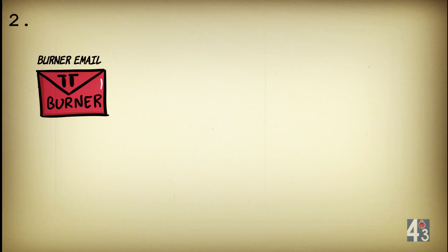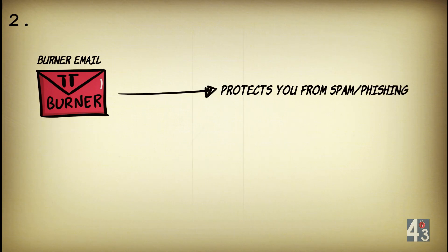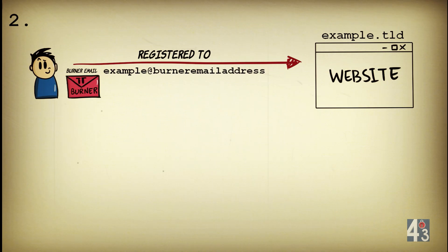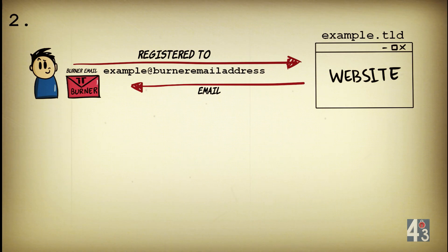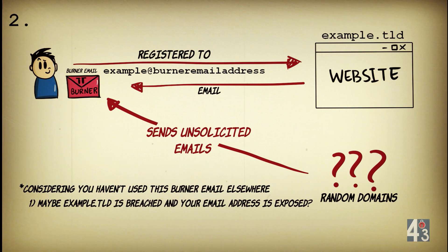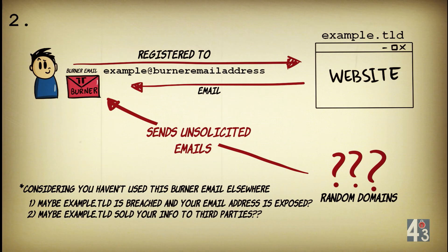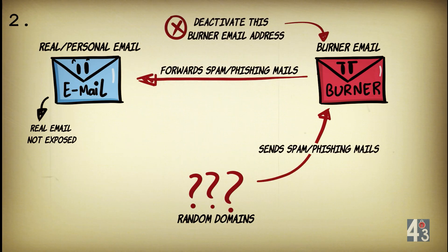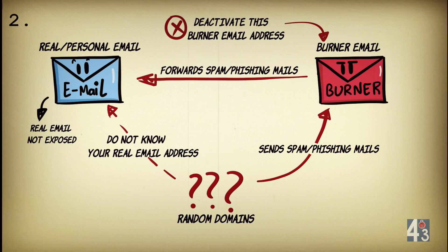Secondly, burner emails protect you from spam and phishing. Imagine you signed up to example.tld with a burner email address. If you receive unsolicited emails to that address from outside that domain, you can draw conclusions: either example.tld was breached and your email is accessible to bad actors, or they sold your information to a third-party marketing list. Either way, your personal email is not exposed. If you receive spam, you can simply deactivate that burner email address, and marketing or data mining companies won't know the real person behind it.